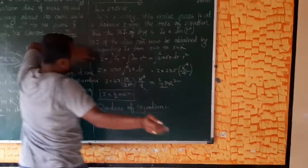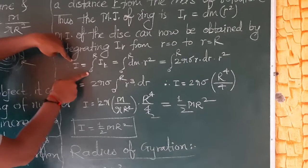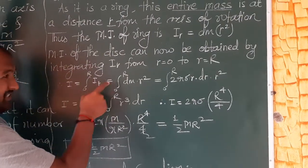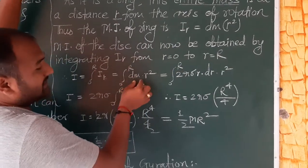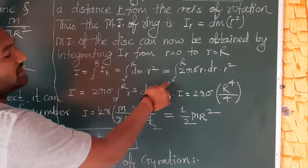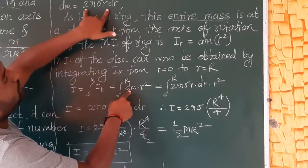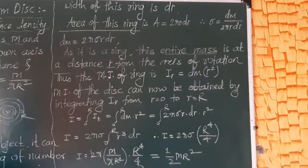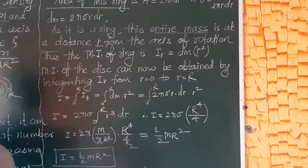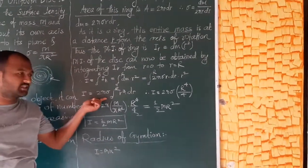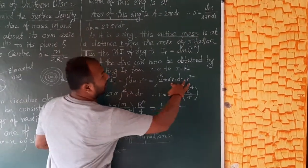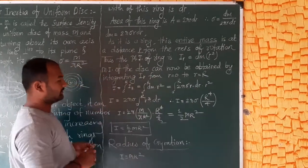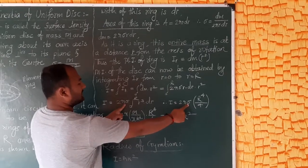So the integration I equals integral from 0 to R of dm times r squared. The value of dm is 2 pi sigma r dr, so: I equals integral from 0 to R of 2 pi sigma r dr times r squared. Taking 2 pi and sigma as constant terms outside the integration, the remaining integrand is r cubed dr.